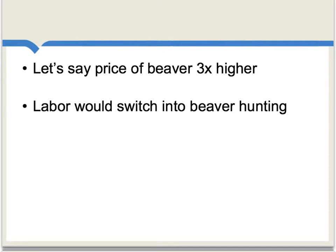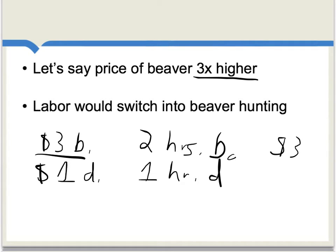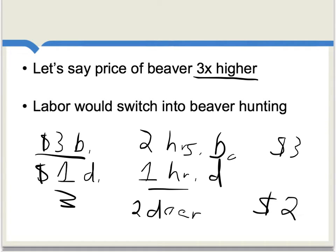Just to make this concrete, let's say that the price of beaver was three times higher than the price of deer — three dollars for a beaver and one dollar for a deer. In accordance with the initial assumption, it takes two hours to kill a beaver and only one hour to kill a deer. If you have two hours to hunt, with two hours you could kill one beaver, and for that one beaver you would get three dollars. Two hours trying to kill deer — it takes an hour to kill a deer, so you would kill two deer, and at one dollar each, you would get two dollars.